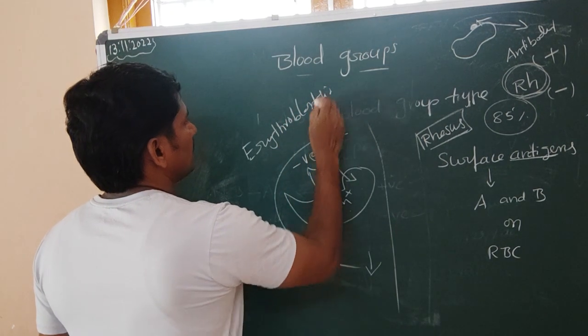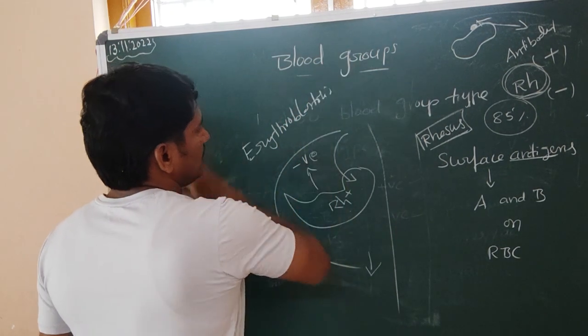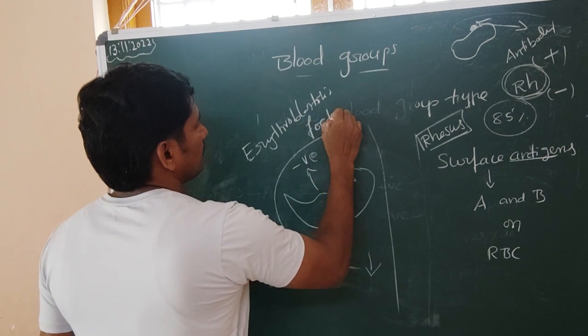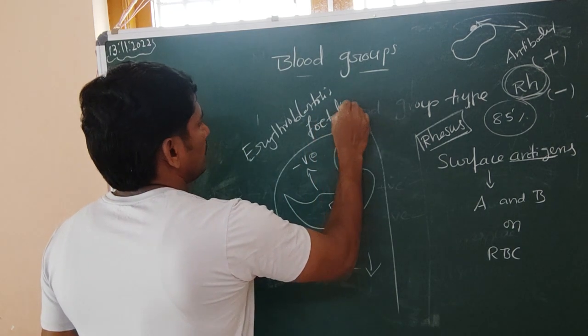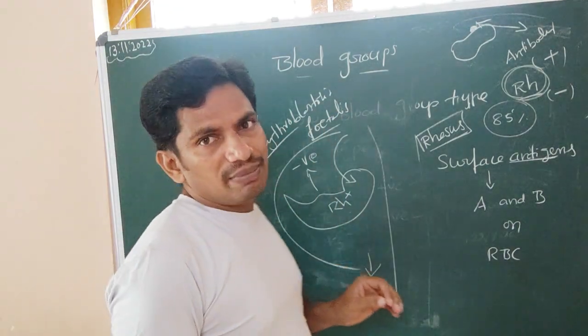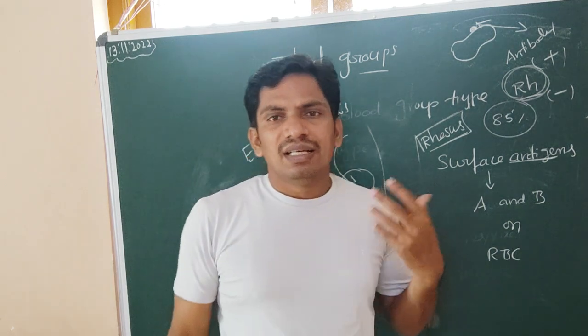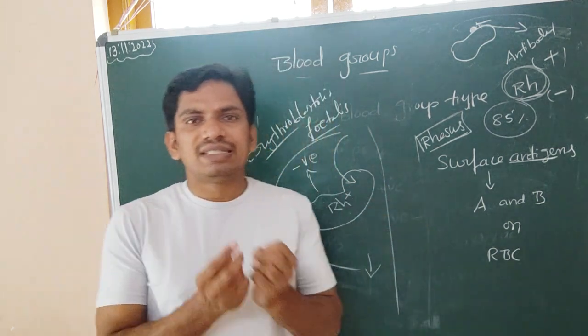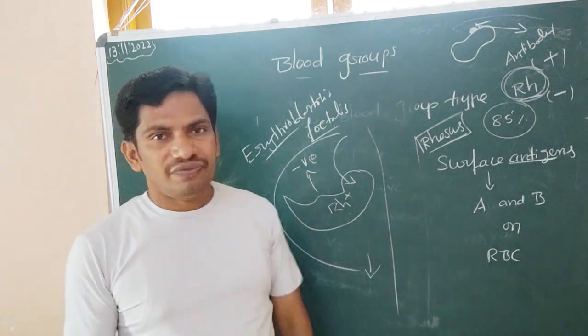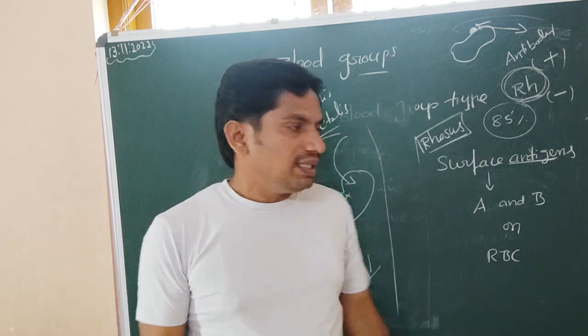That condition is known as erythroblastosis fetalis. 'Erythro' means RBC, 'blasto' means destruction — so it refers to the destruction of the fetus's red blood cells.